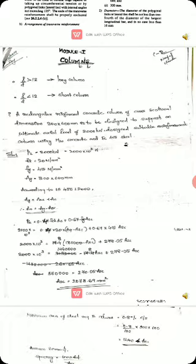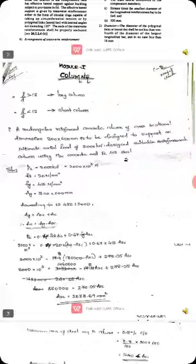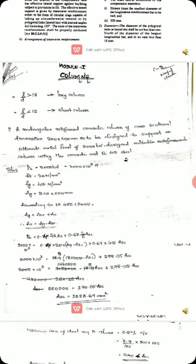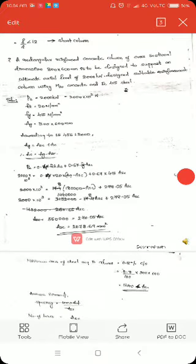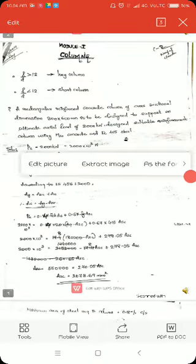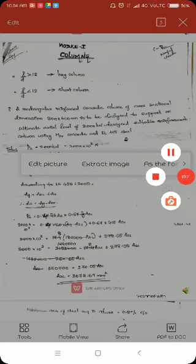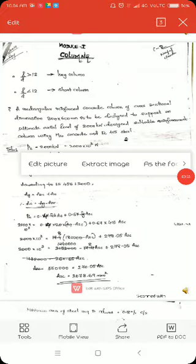According to IS456, gross area of column is the area of steel plus area of concrete. It is written as AG equals AC plus ASC. ASC is the area of steel and AC is the area of concrete. From this equation, we write AC equals AG minus ASC.